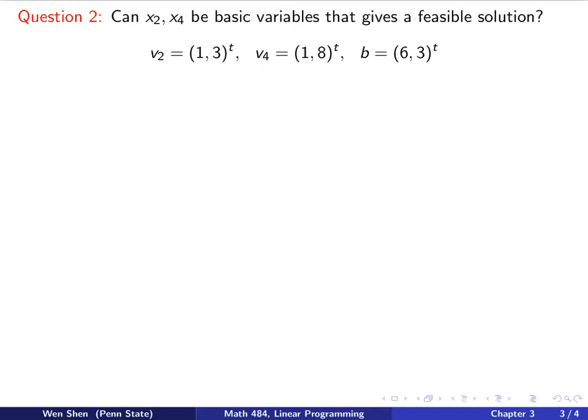Now let's look at a slightly different situation. With the same problem, I'm asking the following question: Can I use x₂ and x₄ as the basic variable that will give me a feasible solution? For convenience, I repeat the vectors here. That's my v₂, that's v₄, and this is b. From the previous discussion, we know that we just need to find out the directions of these three vectors and then to find out if b lies in the wedge formed by v₂ and v₄.